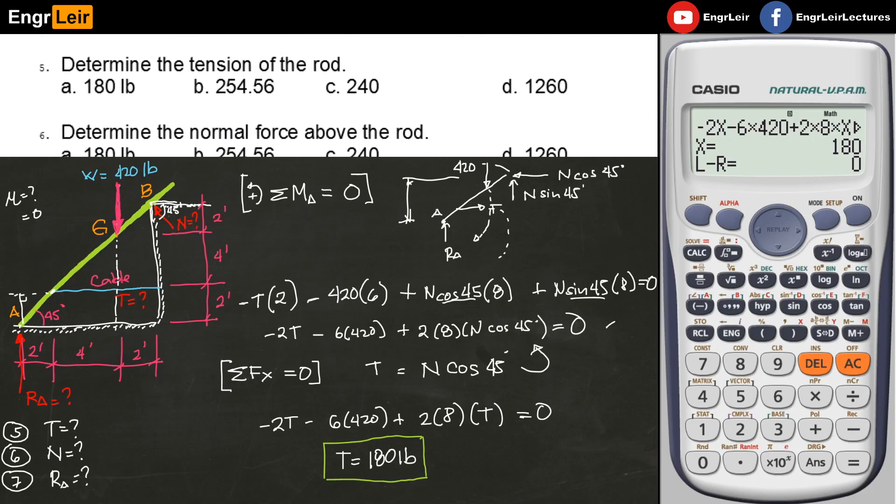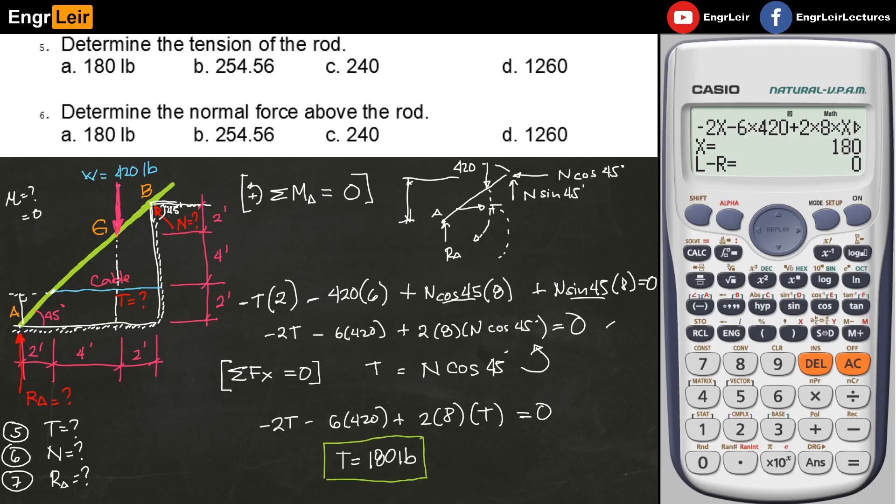For number 6, determine the normal force above the rod. Since you already know, from this equation you can easily solve N. So 180 pounds equals N cosine 45. N is therefore equal to 254.56 pounds. That's the answer for question number 6.